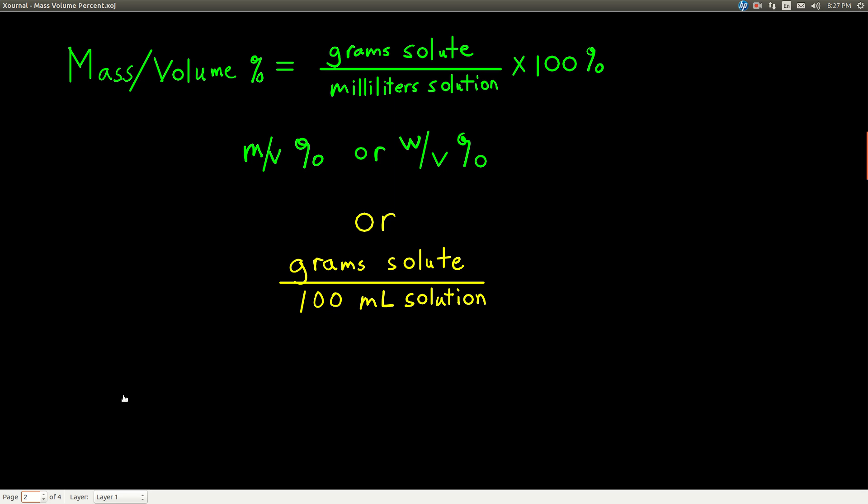So it's grams of solute divided by milliliters of solution times 100 percent. The symbol is either MV percent, percent M/V or percent W/V. W is for weight, and you'll see both of these, so just know that they mean the same thing.